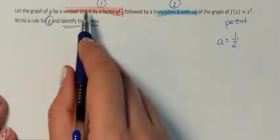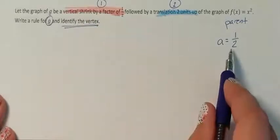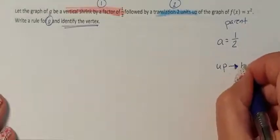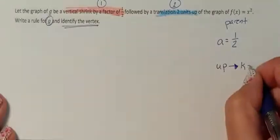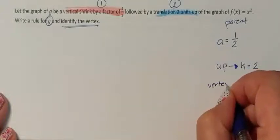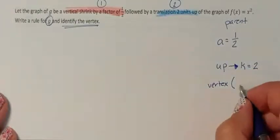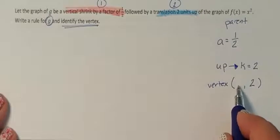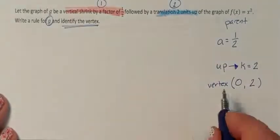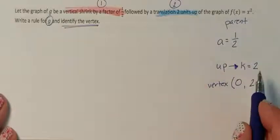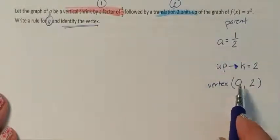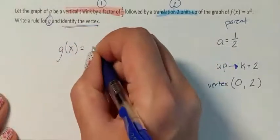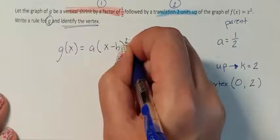The vertical shrink affects a. Vertical stays exactly as it is, so a = one half. There is no other outside multiply happening, so a is done. Moving up affects k, and going up 2 means k = positive 2. Those are the only two movements. I was only told to go up, so my y is 2. I was not told to go left or right, so x is still 0. My vertex is (0, 2).